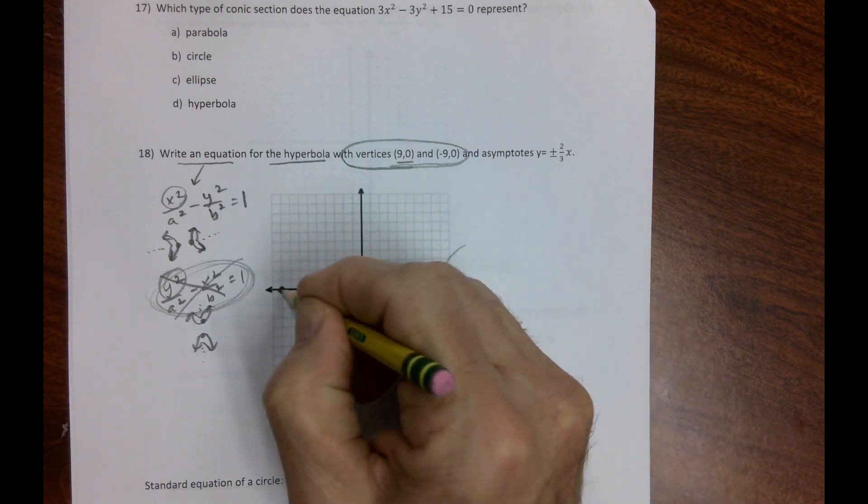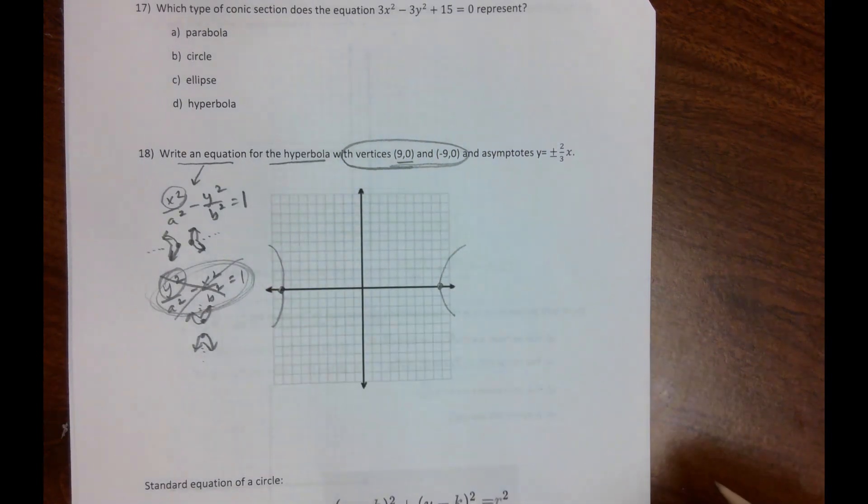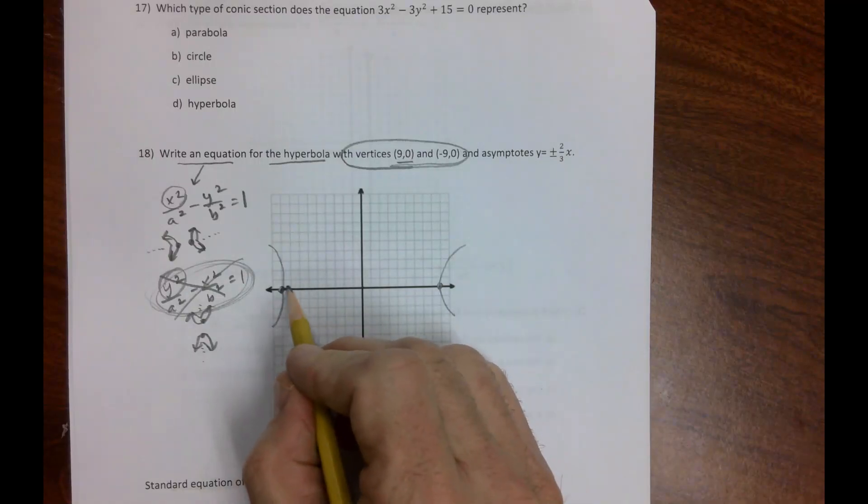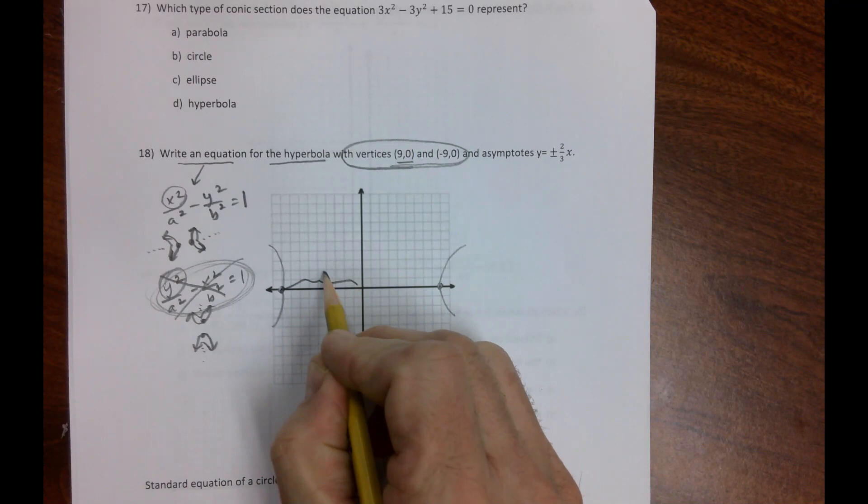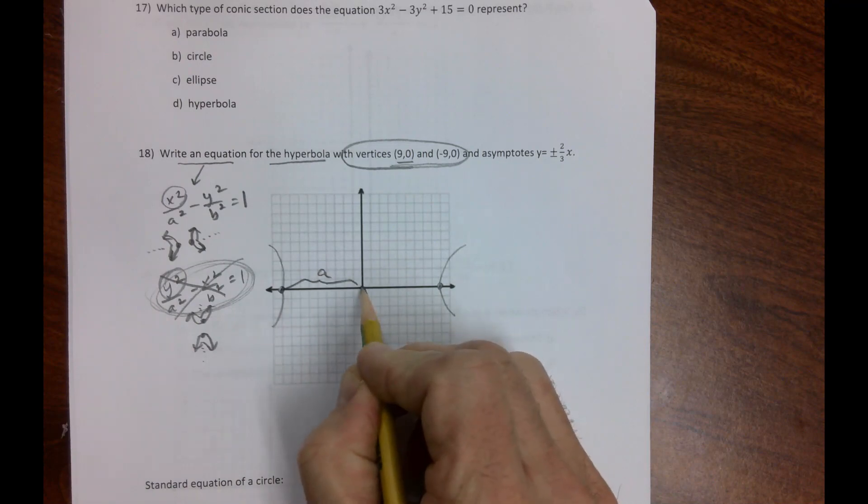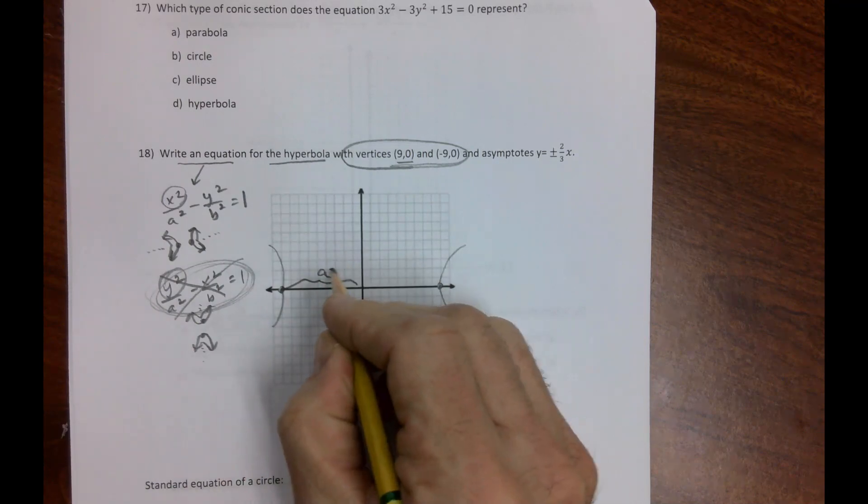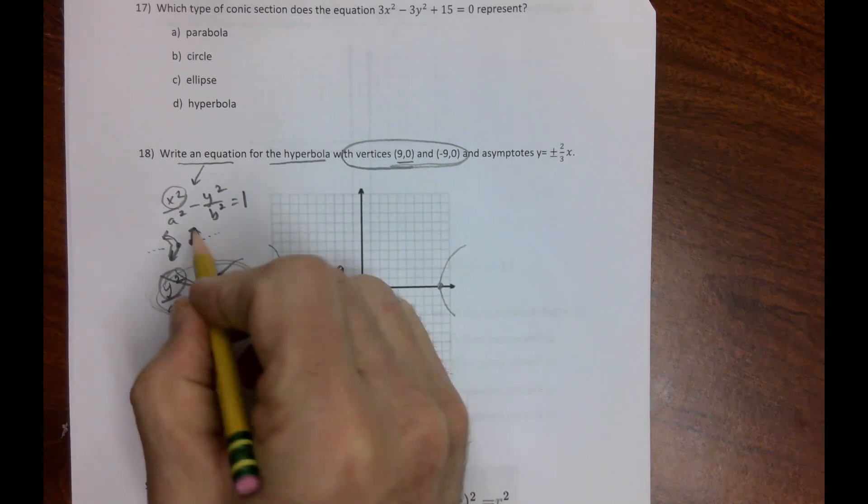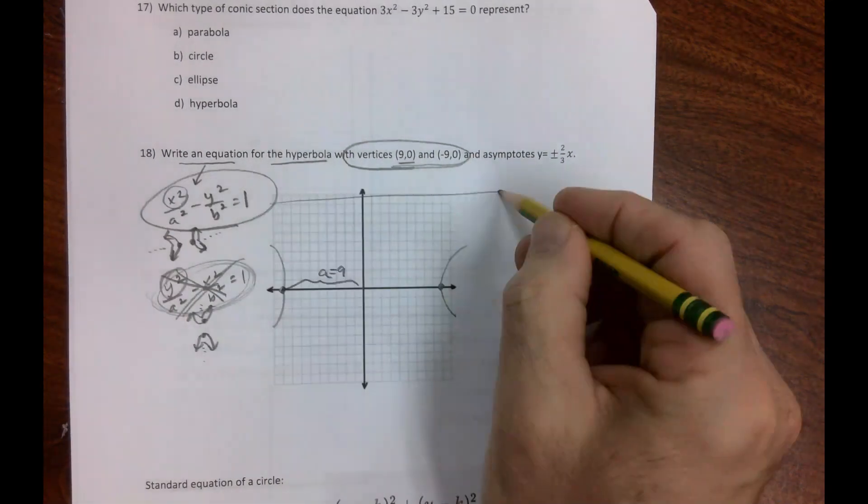If those are vertices, our hyperbola (two parabolas facing opposite directions) will look like that. The distance from center to vertex is always a, so we know that's 9. We know it's not this form; we know it is this one.